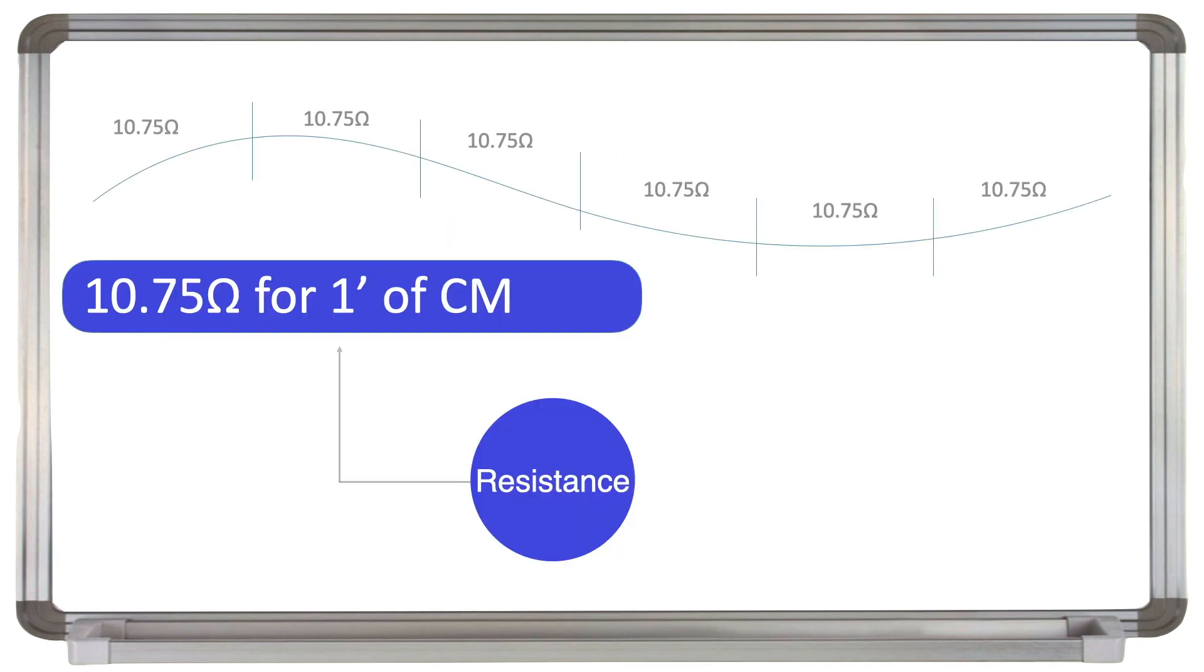The voltage drop is due to resistance, as all cables have some resistance. We use the figure 10.75 ohms as a recognized standard for the resistance of one foot of one circular mil of copper. On the board here, you can see each foot of cable is acting like a resistor in series, and all those resistances add up.